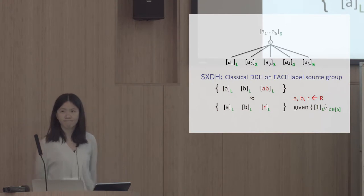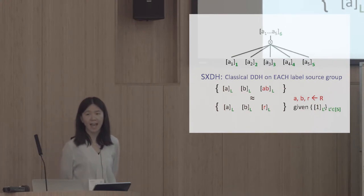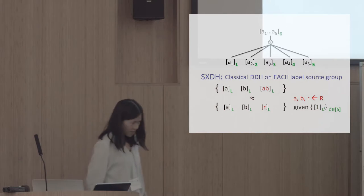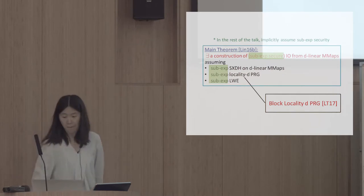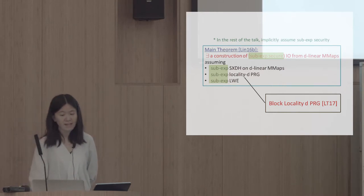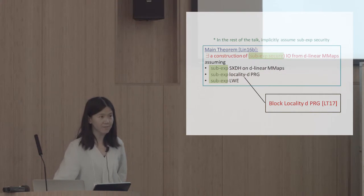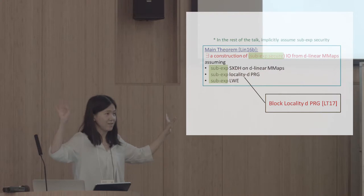There is a question about whether zero tests are allowed in each group: for functionality, you only need it at the end; for security, we handle even the case where zero testing is allowed at every level. The main theorem we achieve is: there is a construction of IO from a degree-D multilinear map, assuming sub-exponential SXDH on the multilinear map, sub-exponentially secure locality-D PRG, and sub-exponential LWE. You can freely substitute the locality-D PRG with a PRG that has blockwise locality. Since everything has sub-exponential security, this issue will be ignored in the rest of the talk.